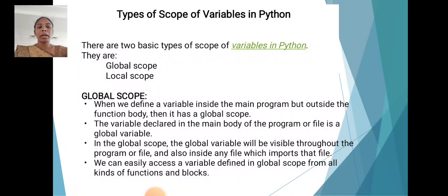In the global scope, the global variable will be visible throughout the program or file, and also inside any file which imports that file. We can easily access a variable defined in global scope from all kinds of functions and blocks.